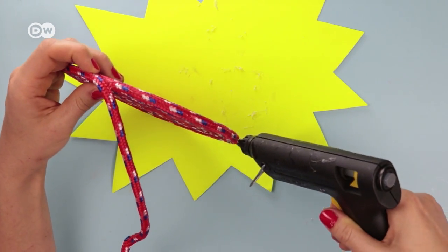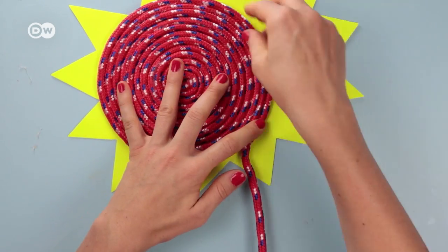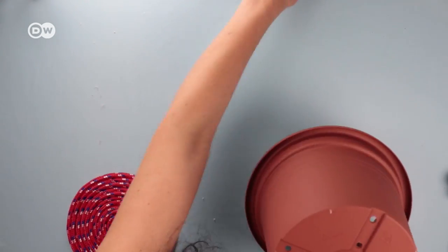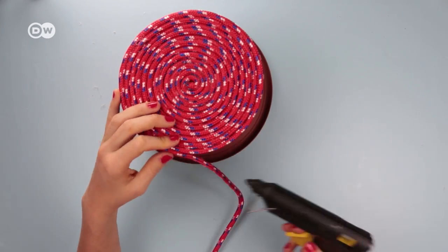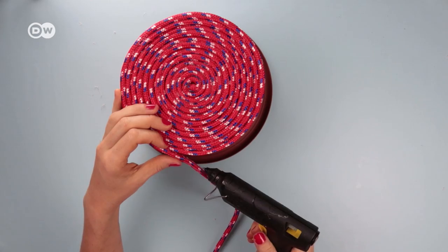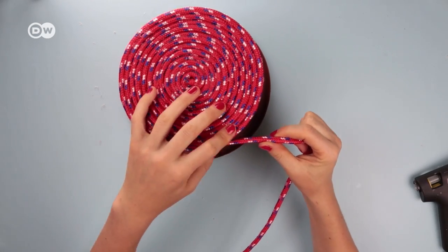But we are making a basket, so the spiral has to be just as large as the bottom of your flower pot. Put the form on the container and wind the cord around the pot. So the next rows will be glued one on top of the other.